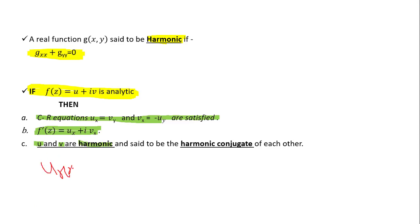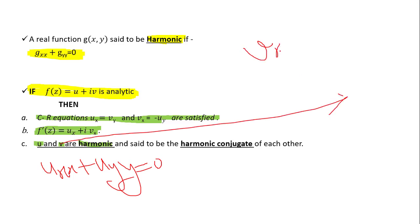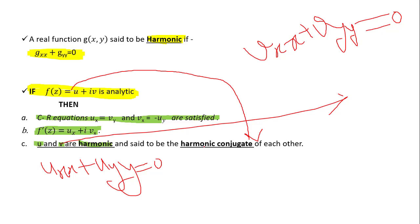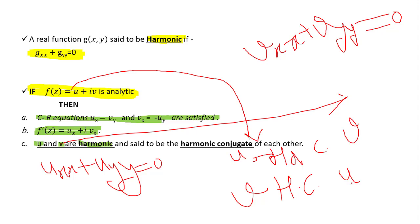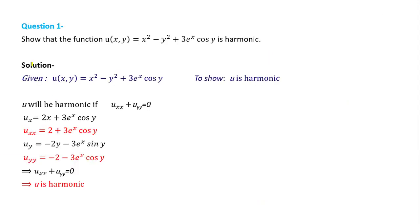Additionally, if f(z) is analytic, then u and v are both harmonic: u_xx + u_yy = 0 and v_xx + v_yy = 0. This also means that u and v are harmonic conjugates of each other — u is the harmonic conjugate of v and v is the harmonic conjugate of u.